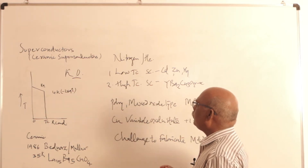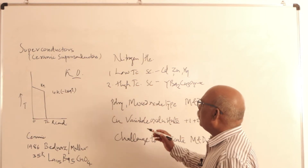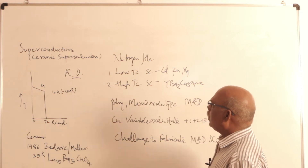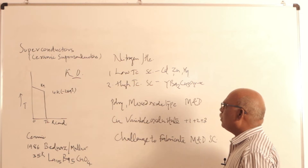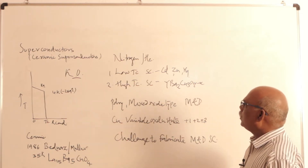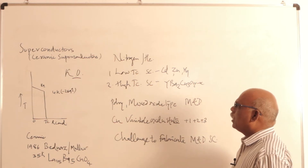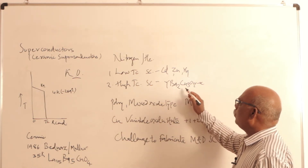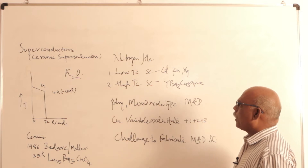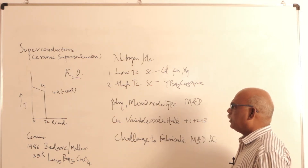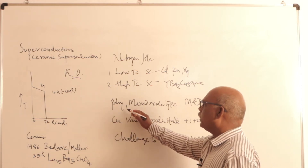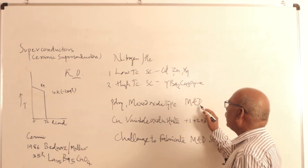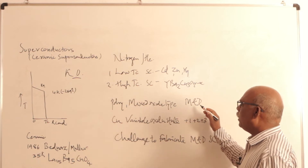There are two categories of superconductors: low temperature superconductors and high temperature superconductor materials. Examples of low temperature superconductors are cadmium, zinc, and mercury. An important example of high temperature superconductors is YBa2Cu3O7-x. These materials are powdery in nature. They are mixed oxide type of materials and they are not malleable and ductile.